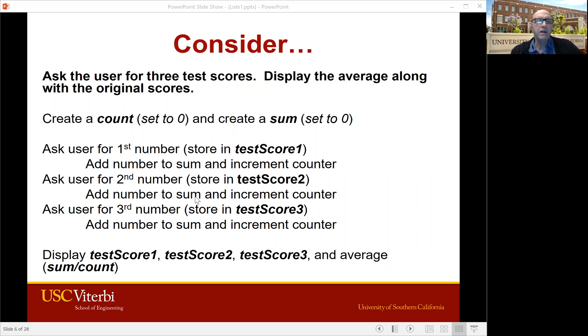And to warm up to this idea, let's say that we are getting some test scores from the user. So they put in one score, we'll put that in a variable called test score 1, put the next score in variable test score 2, the next variable in test score 3. That's a little cumbersome, but it's not too bad yet.